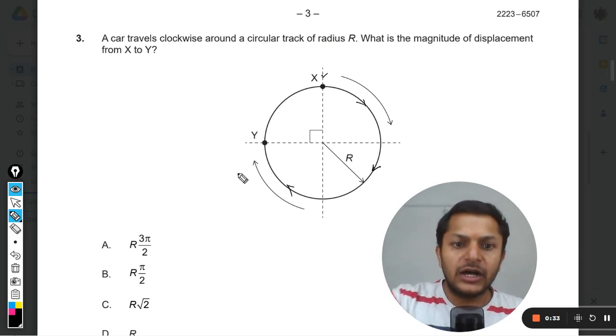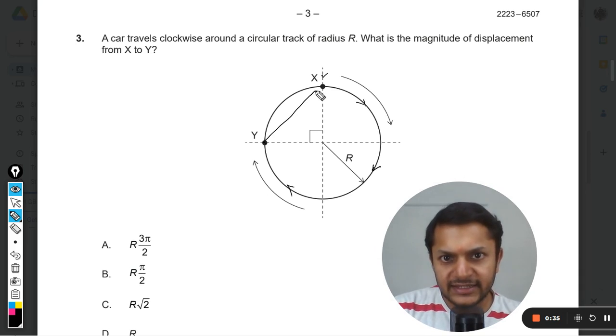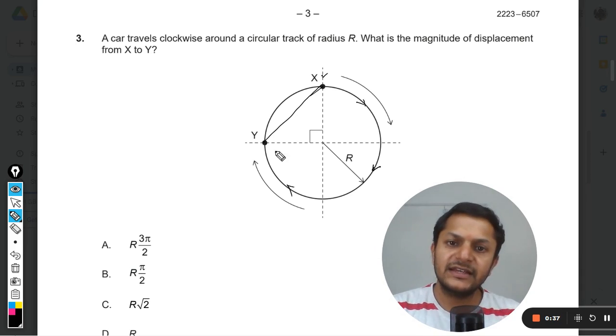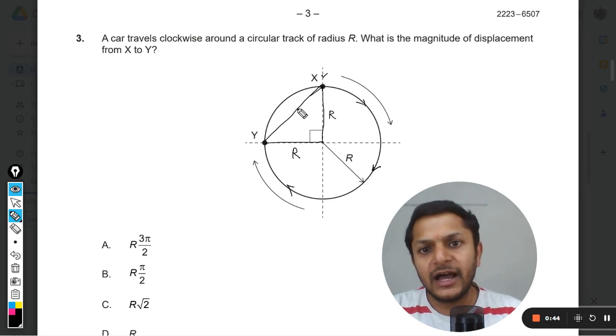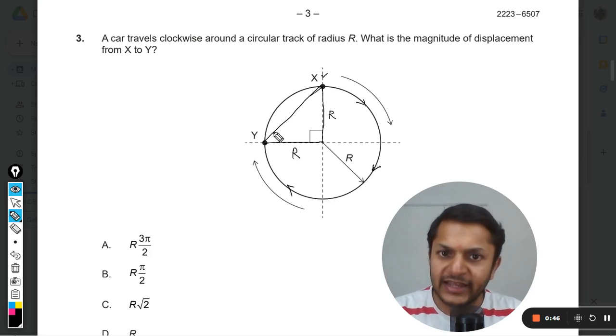So the shortest distance will be this. And so we clearly see that this is a right angle triangle here. This is R, this is R, and this is the displacement that we want to find.